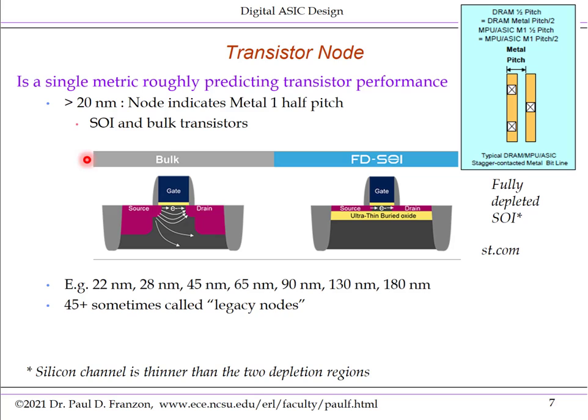There are two basic technologies in these older nodes. There's bulk silicon — a CMOS device where electrons or holes traverse a channel from the source to the drain, and that channel's conductivity is modulated by a gate. The gate can turn off the channel so there's no conduction, or turn it on so there's strong conduction. There's also SOI, or silicon on insulator, named because there's an insulator buried beneath the gate channel.